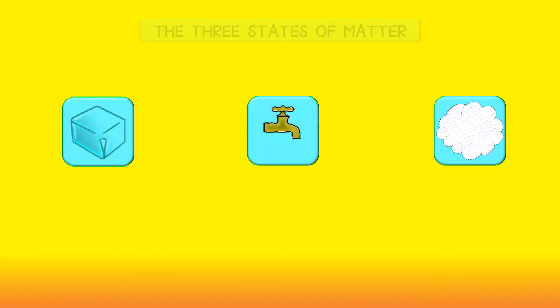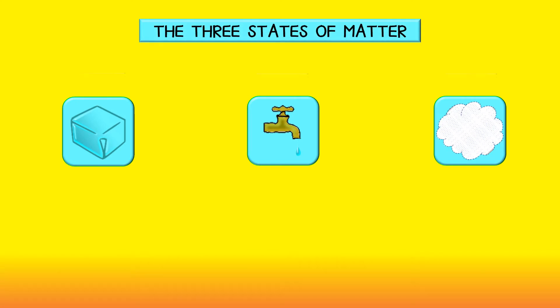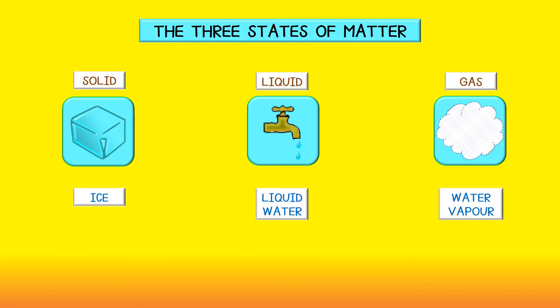The three states of matter. Matter may take different forms. There are three states of matter. The three states of matter are solid, liquid, and gas.